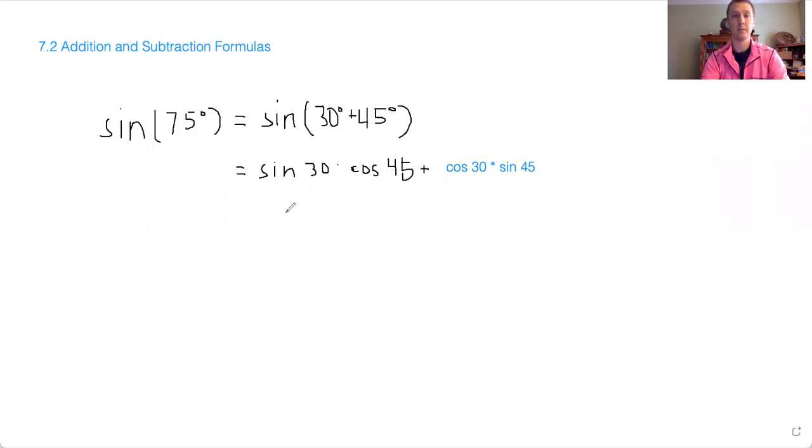And these things we know. Sine of 30 is one half, cosine of 45 is root 2 over 2, cosine of 30 is root 3 over 2, sine of 45 is root 2 over 2. So now this problem of finding the sine of that angle, which is not common at all, boils down to just finding sines and cosines of common angles.